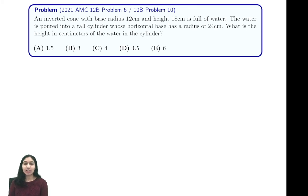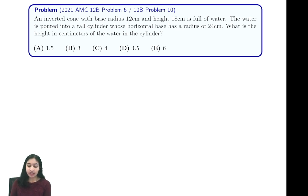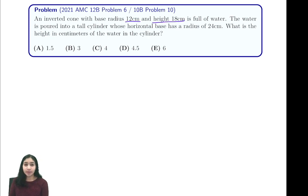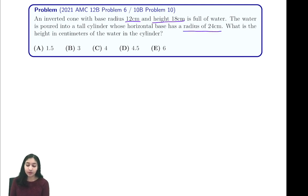Hi everyone, in this video we're going to be going through 2021 AMC 12B Problem 6, or 10B Problem 10. It states that an inverted cone with base radius 12 centimeters and height 18 centimeters is full of water. The water is poured into a tall cylinder whose horizontal base has a radius of 24 centimeters.